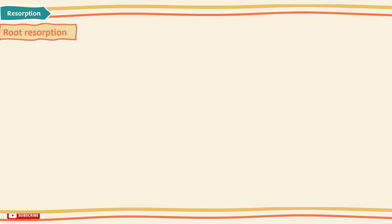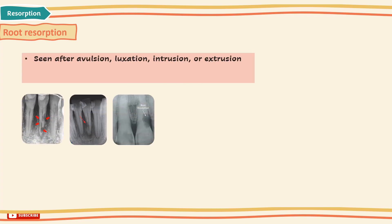Root resorption commonly occurs after traumatic injuries such as avulsion, luxation, intrusion, or extrusion, which we have discussed in detail in the previous tutorials.